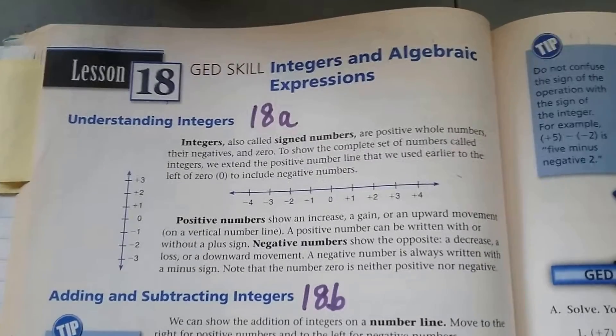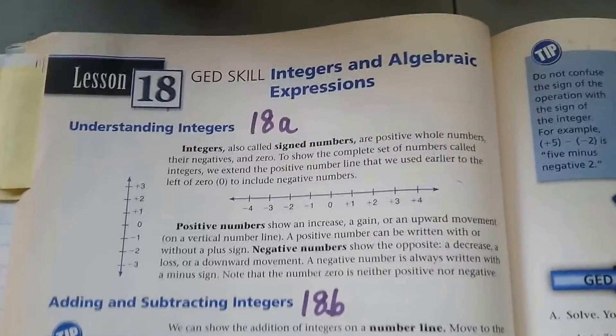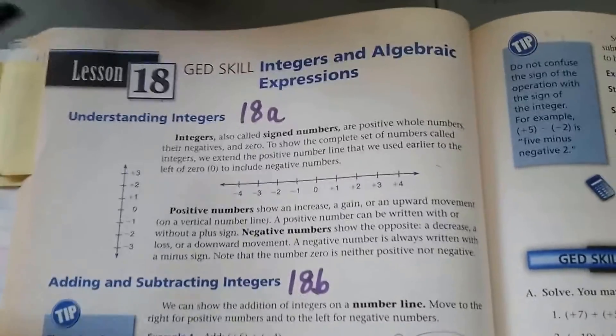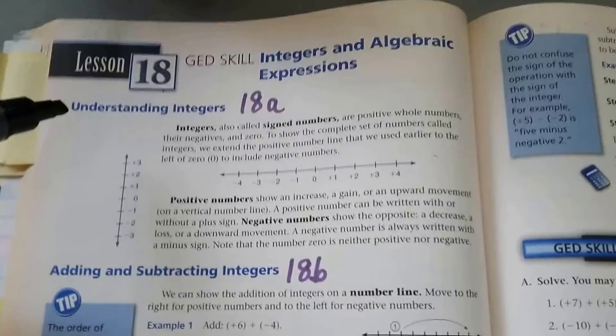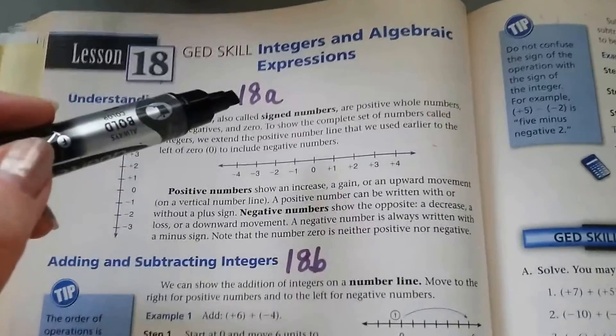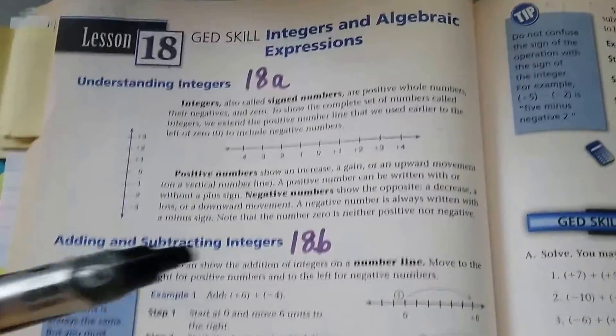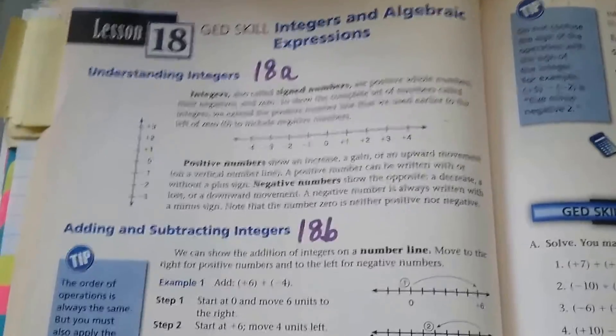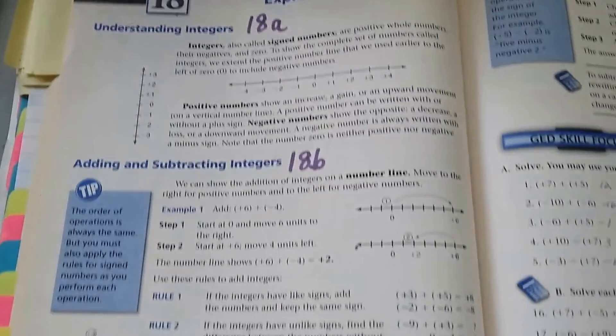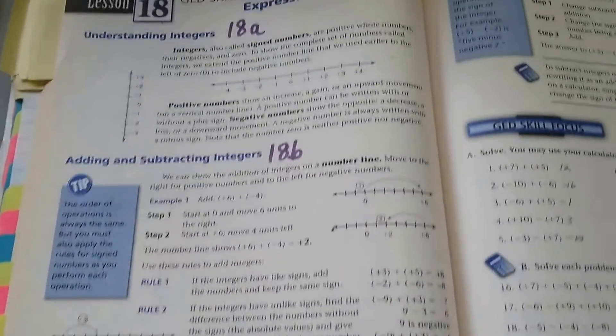You can actually see in the book for lesson 18, it says Integers and Algebraic Expressions. Then it's got this subtopic, understanding integers, that would be 18a. Adding and subtracting integers would be 18b. That way I can break each one up. Make it easy on you.